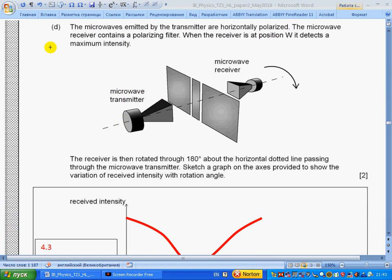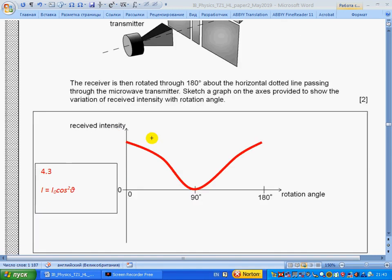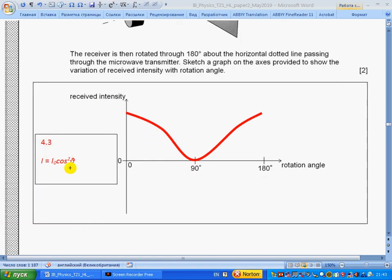Part d: The microwaves emitted by the transmitter are horizontally polarized. The microwave receiver contains a polarizing filter. When the receiver is at position W, it detects maximum intensity. The receiver is then rotated through 180 degrees about the horizontal dotted line passing through the microwave transmitter. Sketch the graph on the axis provided to show the variation of received intensity with rotation angle. I use section 4.3 formula for intensity: it is cosine squared. When angle is zero, cosine is one, so we have maximum intensity. When angle is 90, cosine is zero, we have zero intensity. When angle is 180, we have again minus one squared, so again maximum intensity. This is how the graph looks.